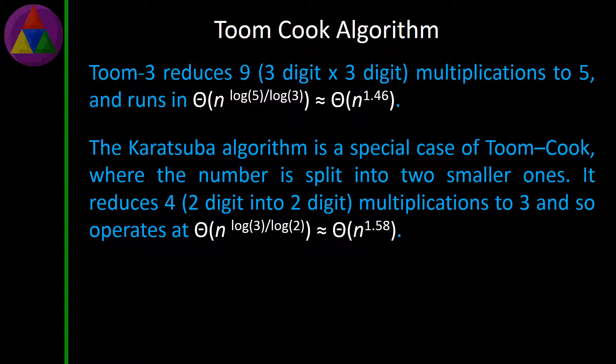The Karatsuba algorithm is a special case of Toom-Cook where the number is split into two smaller ones. It reduces 4 (2 digit × 2 digit) multiplications to 3 and so operates at Θ(n^(log3/log2)) ≈ Θ(n^1.58).